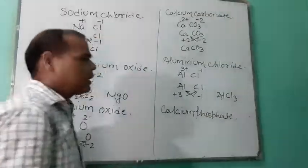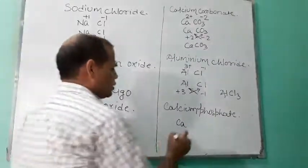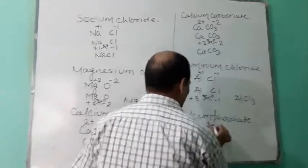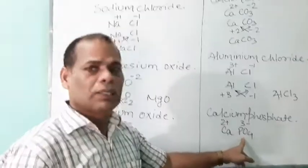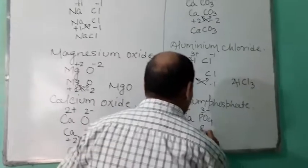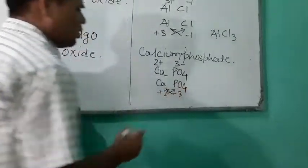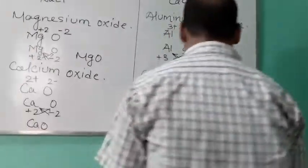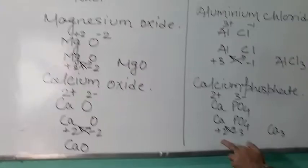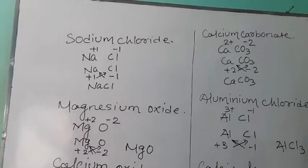Calcium phosphate. Calcium is Ca; phosphate is PO4. Calcium has two units of positive charge; phosphate has a valency of minus three. Write Ca, PO4, plus two, minus three, and cross each other. Three goes towards the calcium side, and two goes towards the phosphate side. So the formula of calcium phosphate is Ca3(PO4)2.